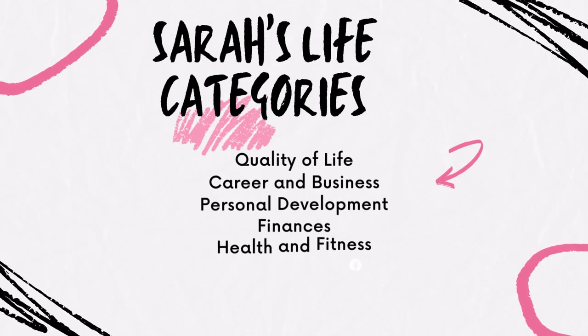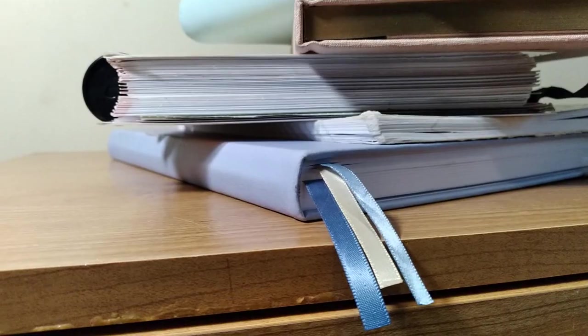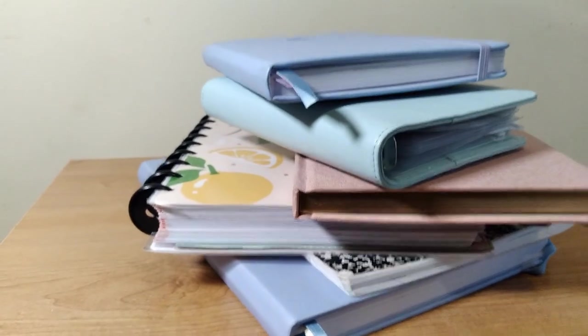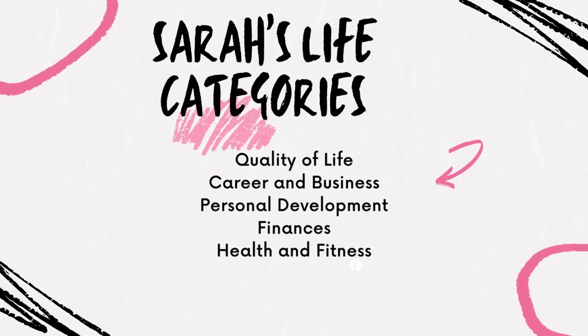She knows she wants to see a change in her quality of life, career and business, personal development, finances, and health and fitness. She should start by getting a notebook and writing down her current situation in all these categories in brief three to five sentences if possible.